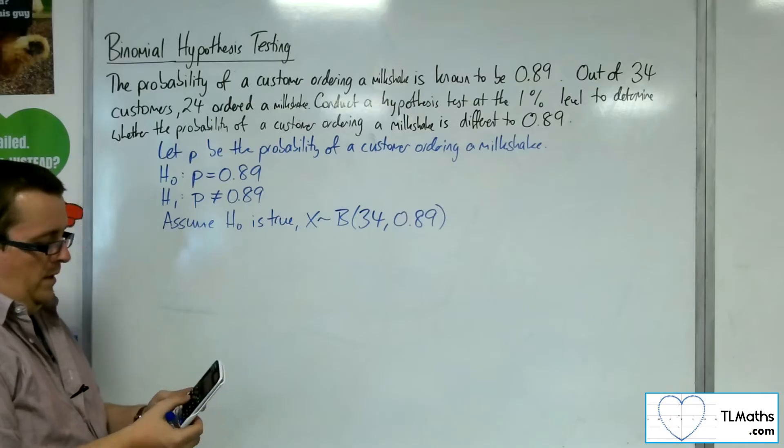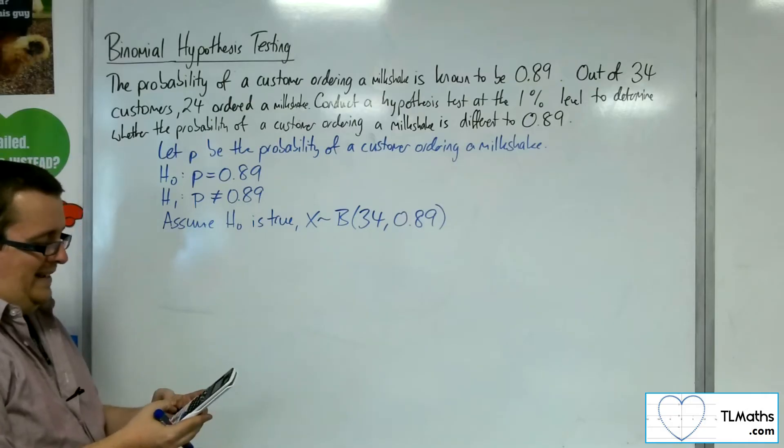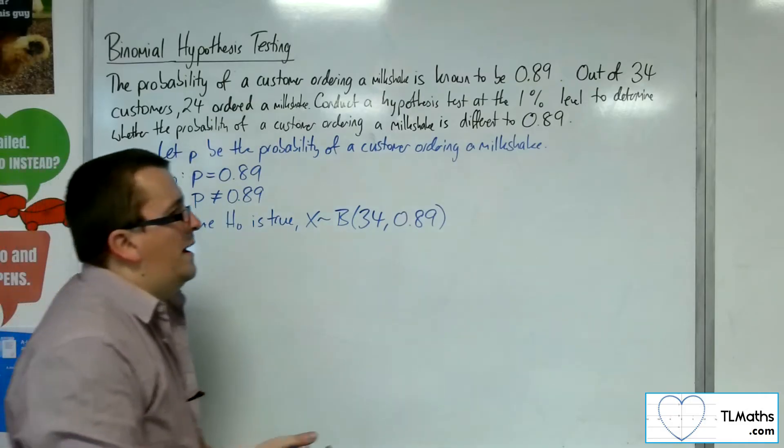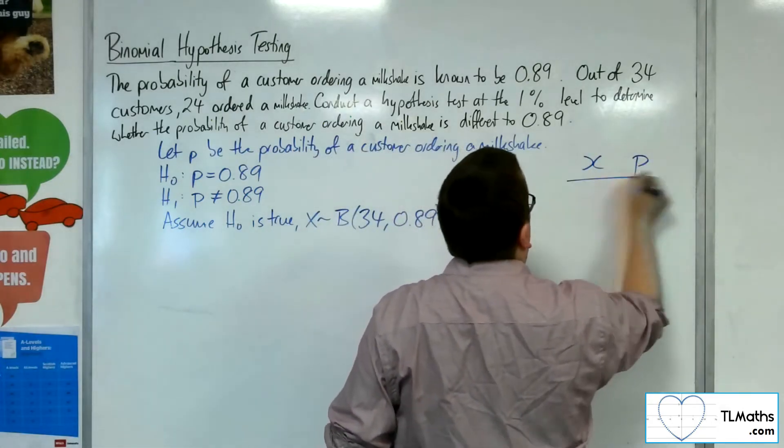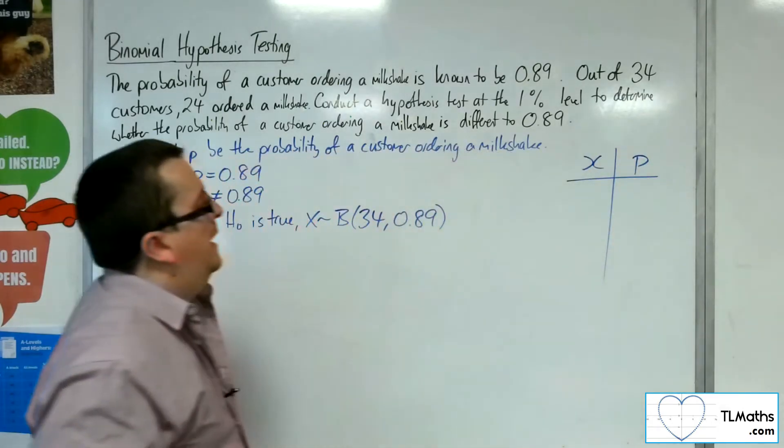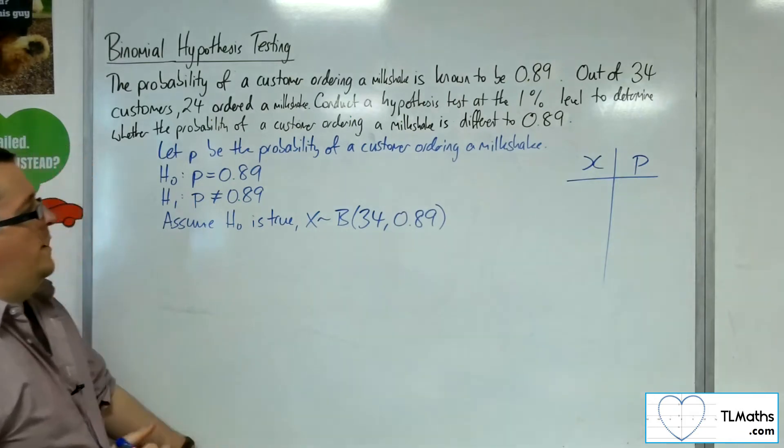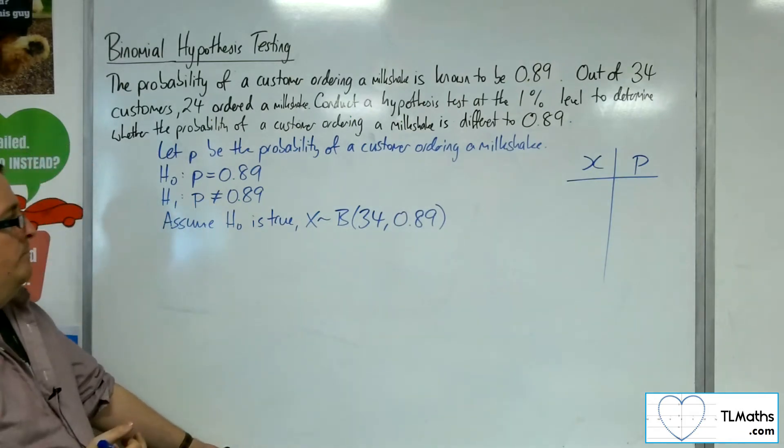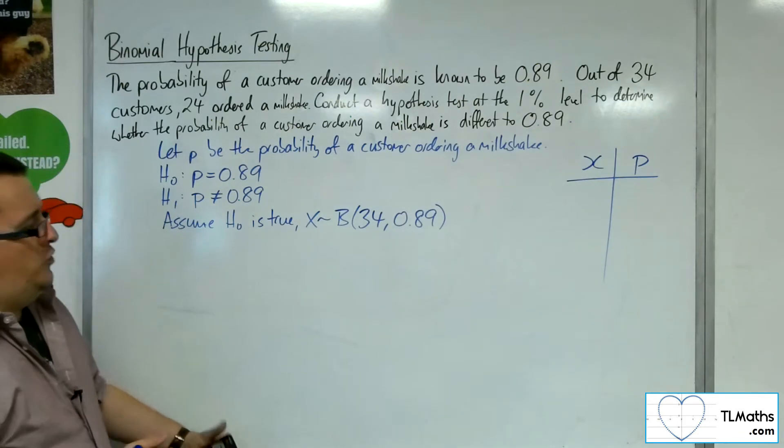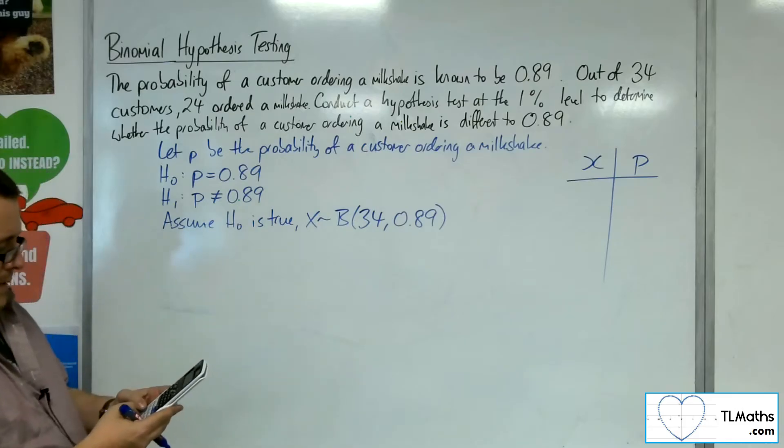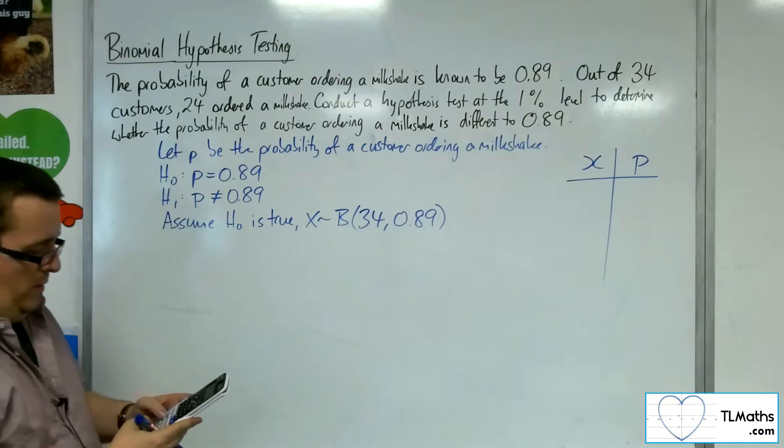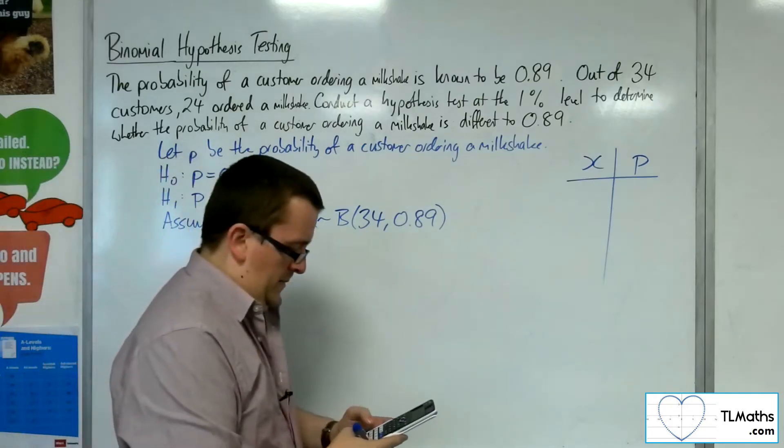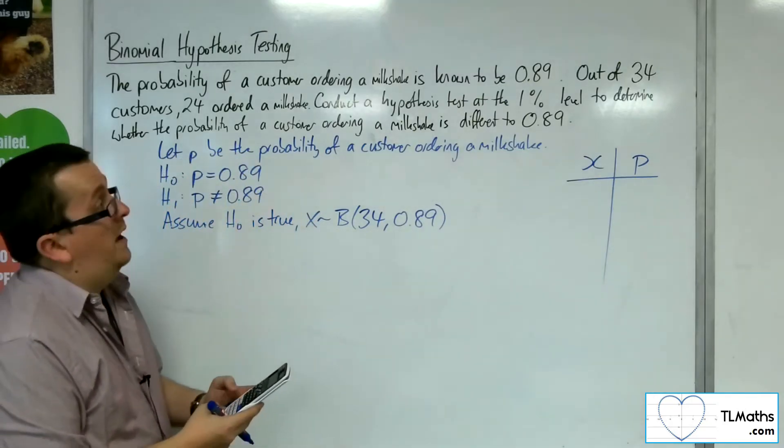Menu 7, scroll down to binomial CD list. For our X's, let's try 20 and up, just to be safe. 20, 21, 22, up to 34.